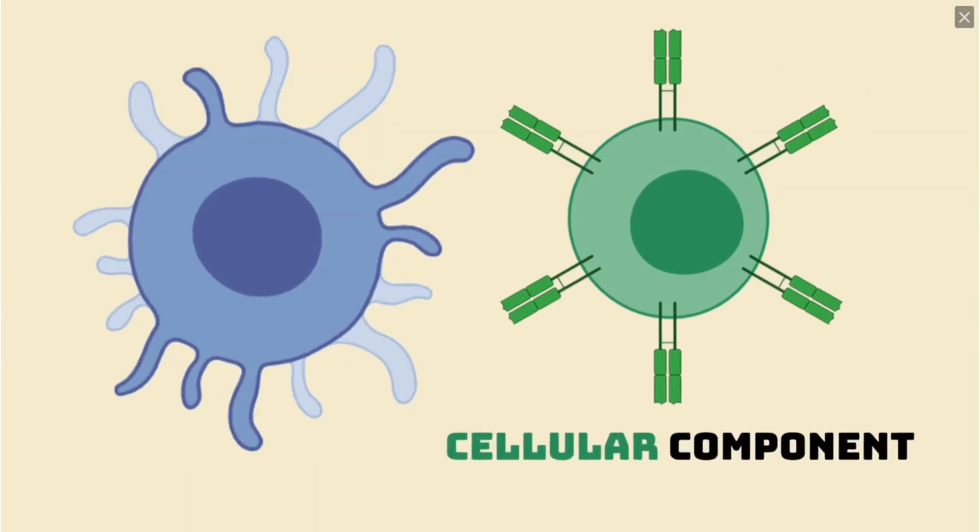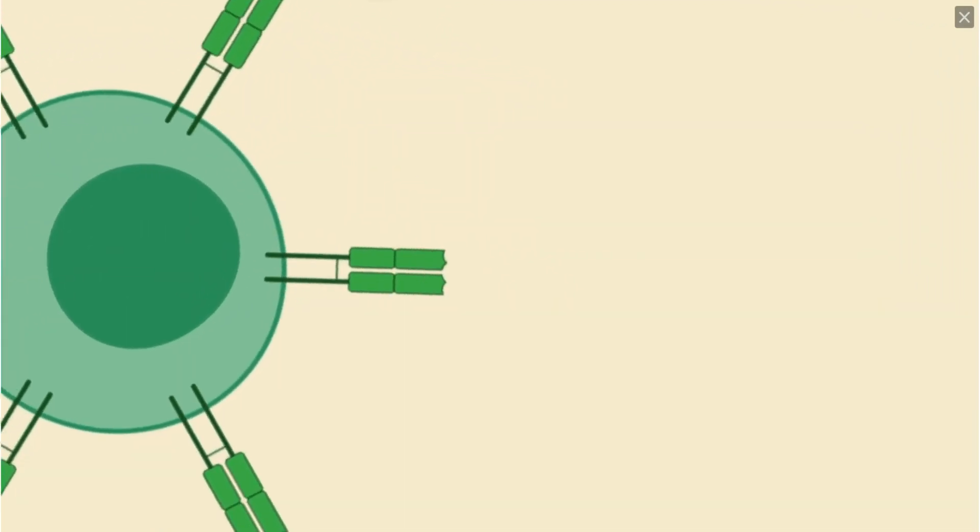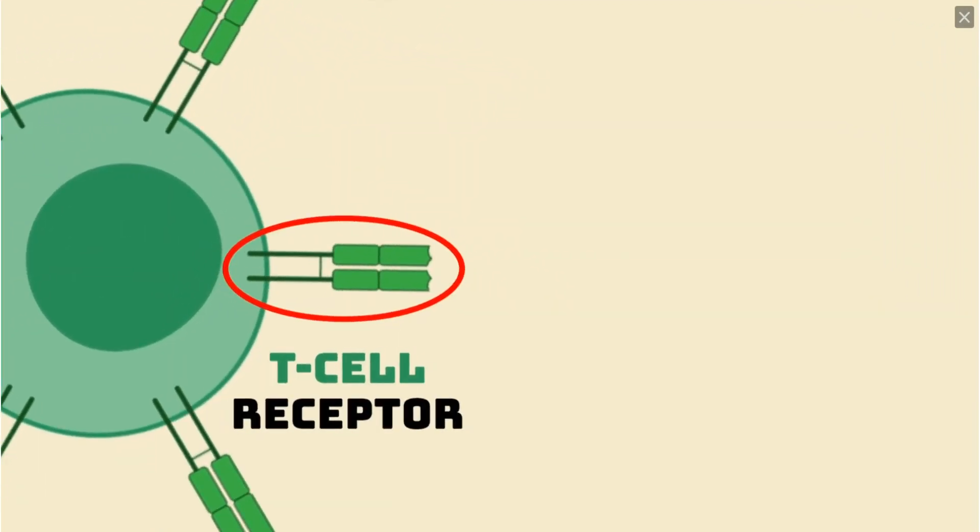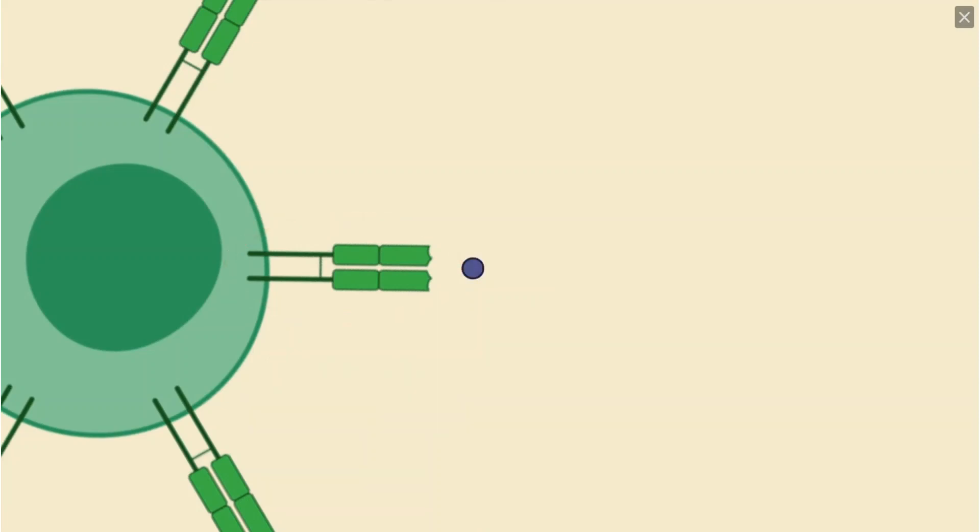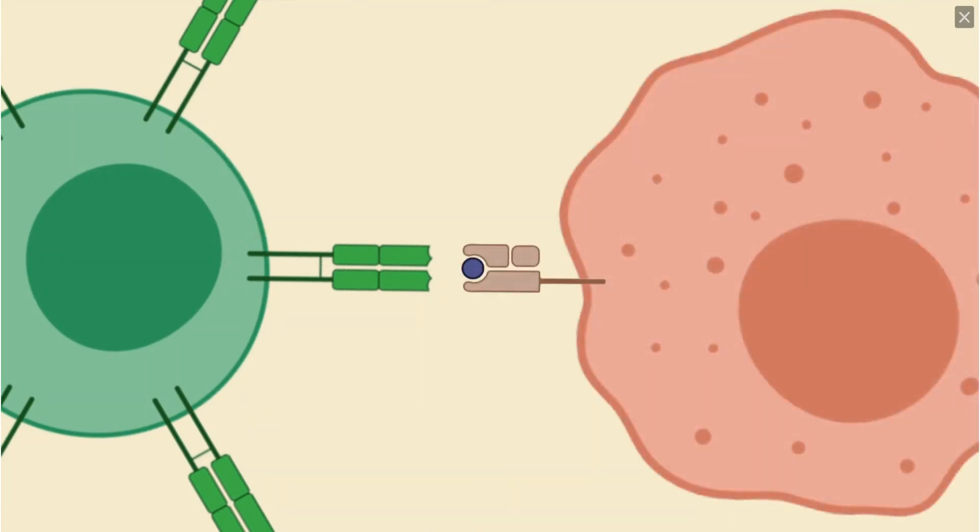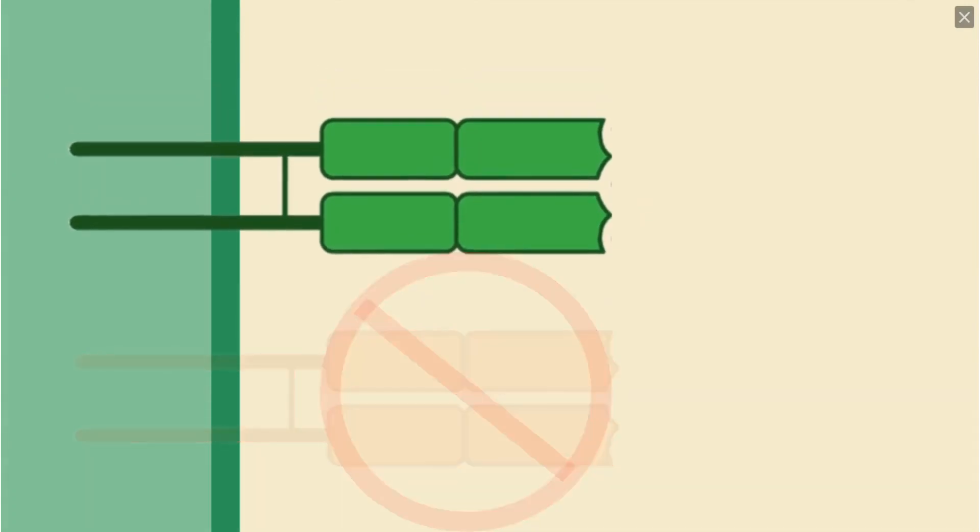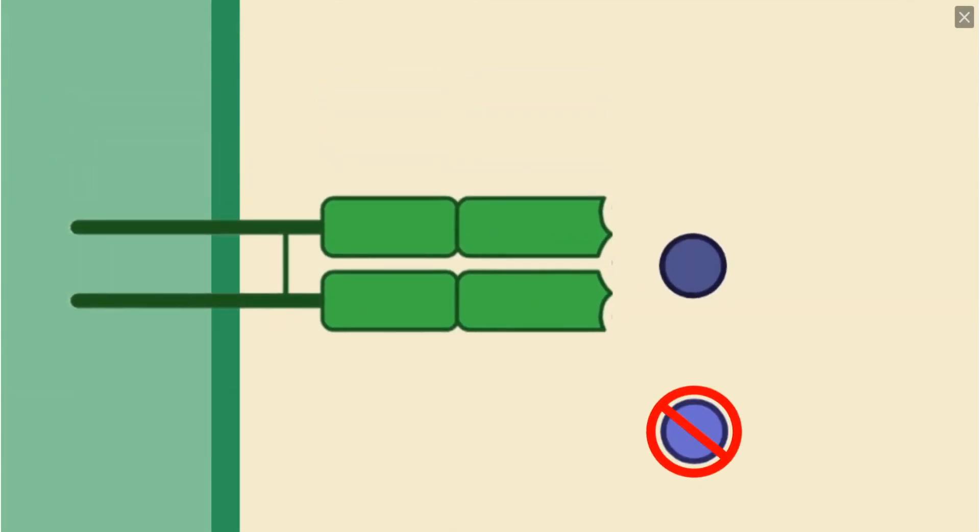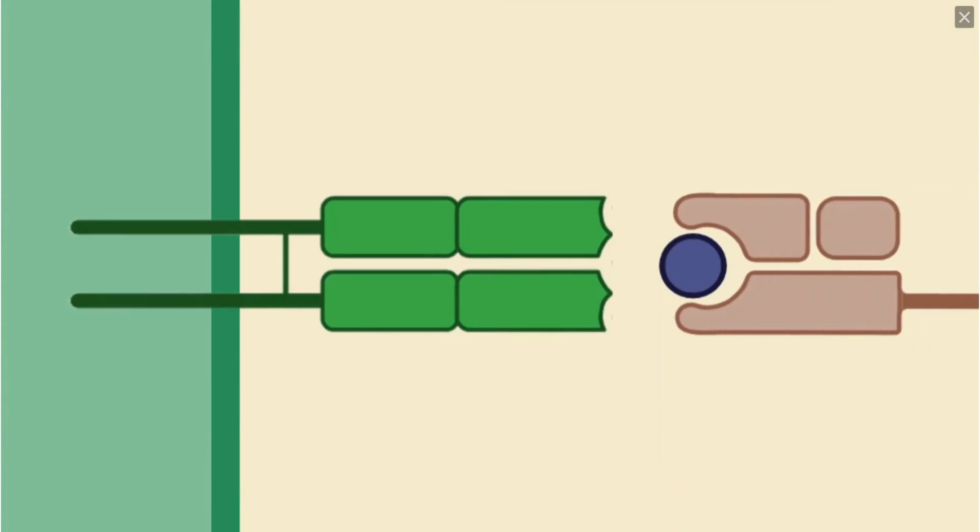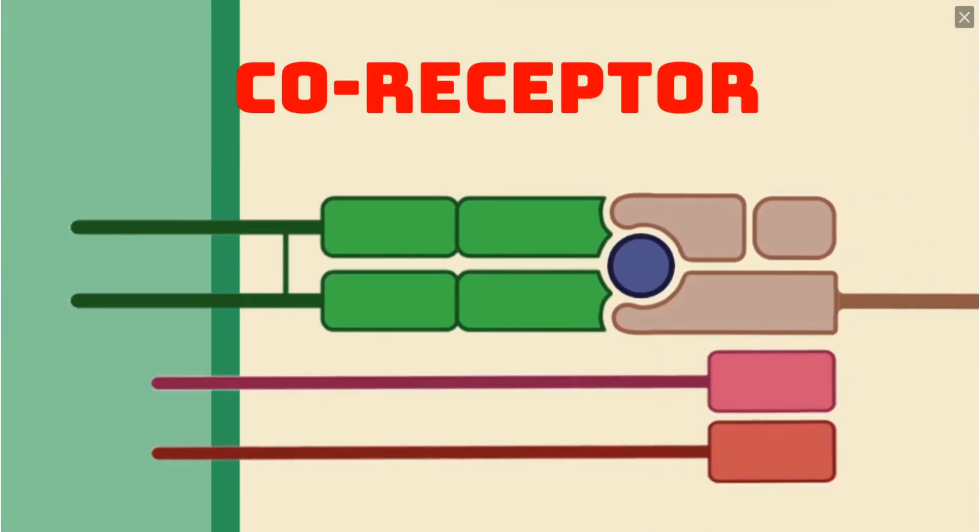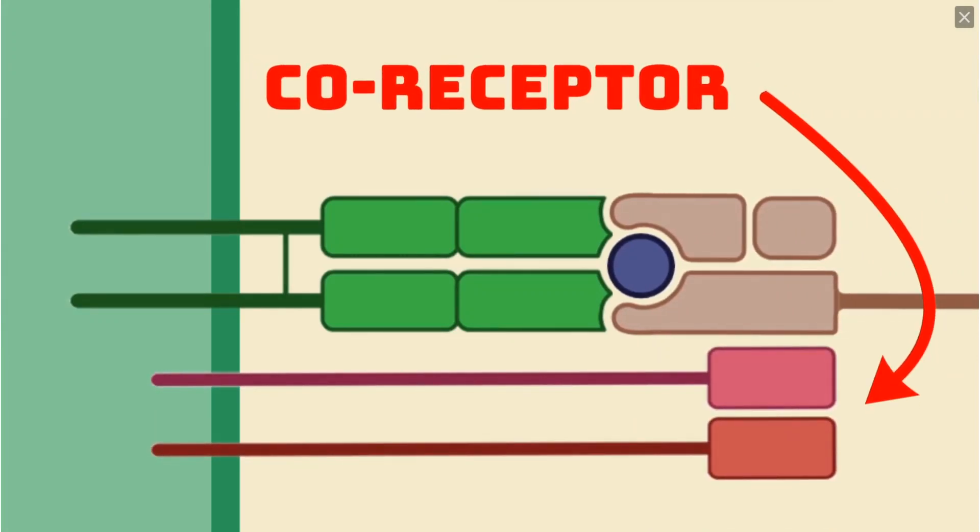T cells have a wide range of functions, but all possess an aptly named T cell receptor, which can recognize antigens only when they are presented on MHC proteins. Each T cell produces only one type of T cell receptor, that will only recognize one specific part of one antigen. The interaction also requires a co-receptor from the T cell, which serves as a way to distinguish the two major classes of T cells.